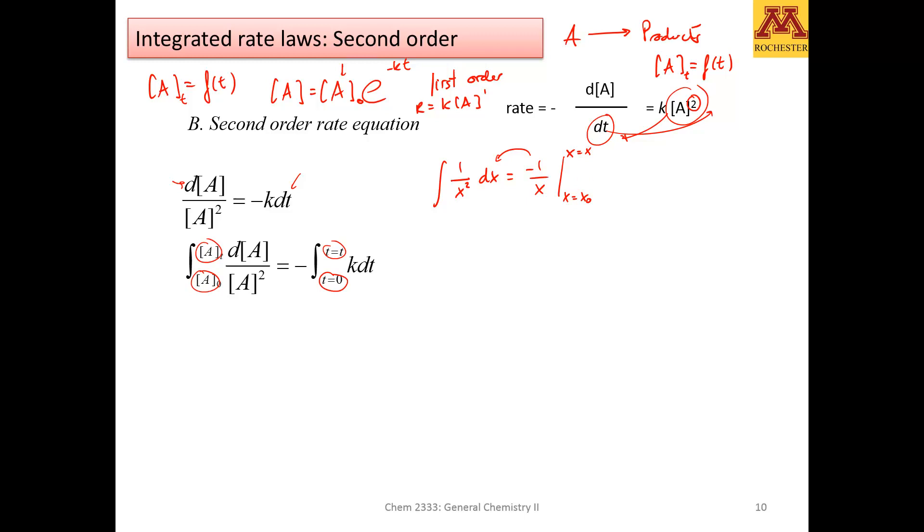In this case, this integral is 1 over A between the extremes, the initial concentration and any given concentration, and I'm forgetting the negative. I'm going to put the minus 1 in here, so that's the final minus initial. Hopefully you can follow this.